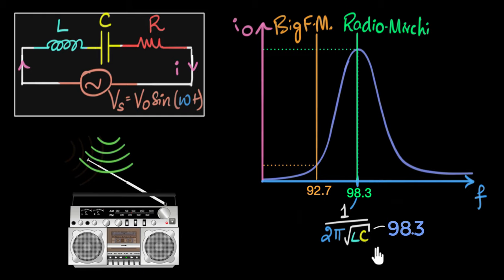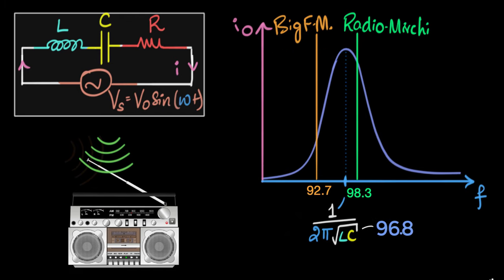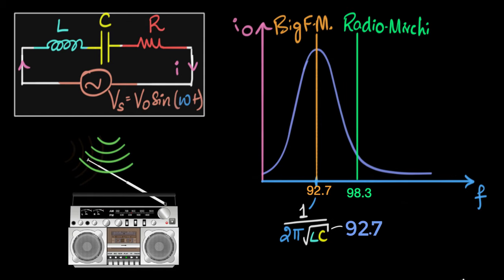As you increase the value of capacitance, the resonant frequency will start shifting towards the left. So the graph will start shifting towards the left, and your new graph will eventually come to this. Now the opposite happens. It's the Big FM, it's these messages that start exciting your radio because your radio's resonant frequency has changed. And as a result, your radio will start picking up those signals. This is how by using resonance concepts, you can tune into any station that you want. Beautiful, isn't it?